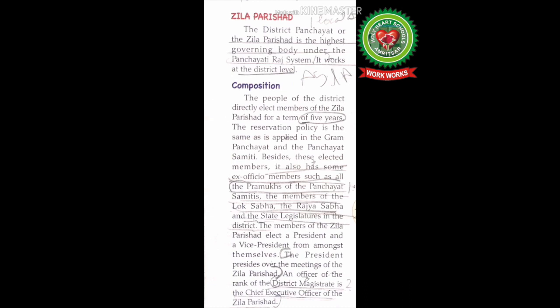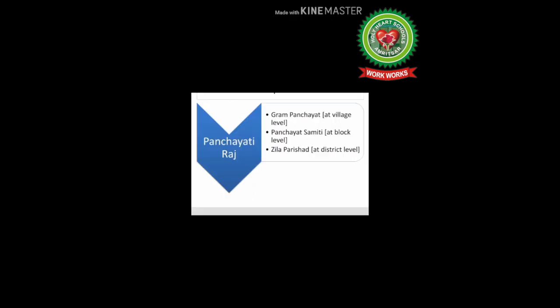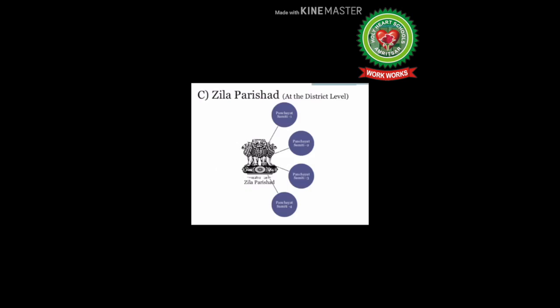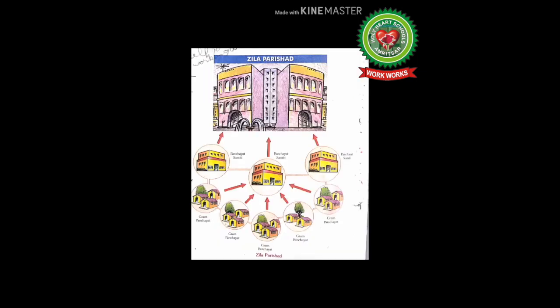Now let's read about Jila Parishad. The district panchayat, or Jila Parishad, is the highest governing body under the Panchayati Raj system. It works at the district level — the third tier of the Panchayati Raj system. A number of Panchayat Samithis come under a Jila Parishad, which coordinates their activities. All Gram Panchayats come under Panchayat Samithis, and all Panchayat Samithis come under the Jila Parishad.